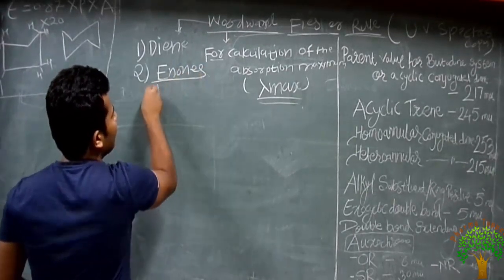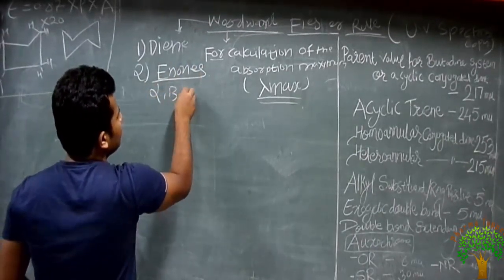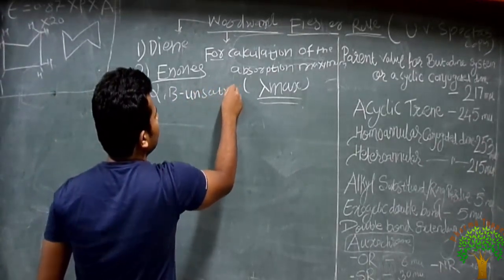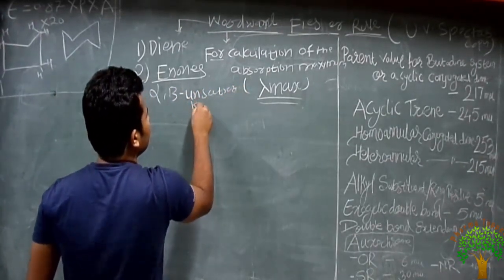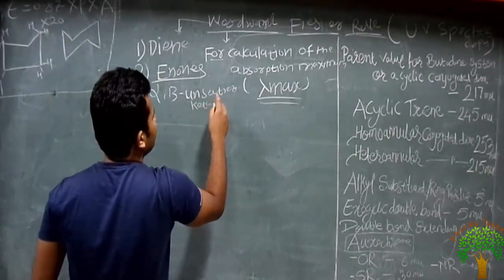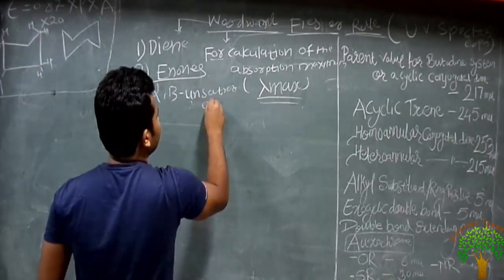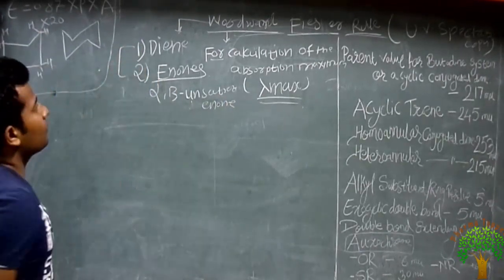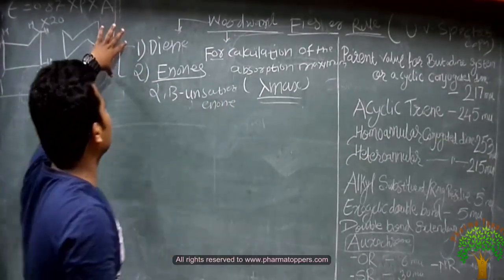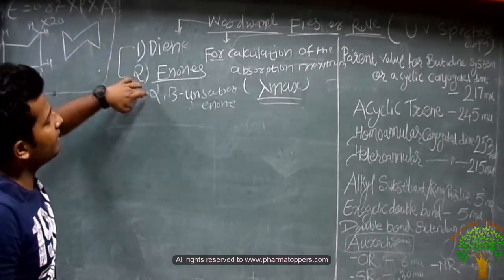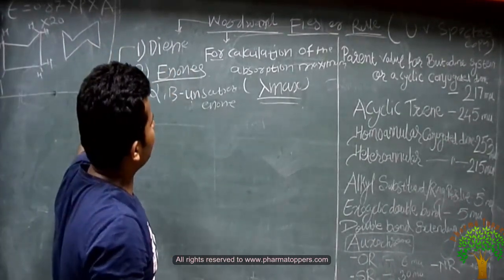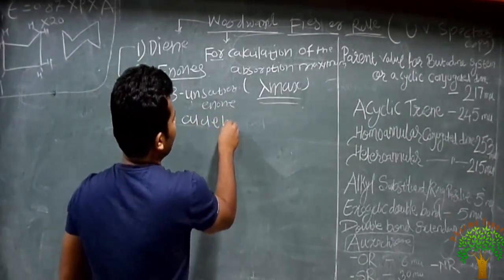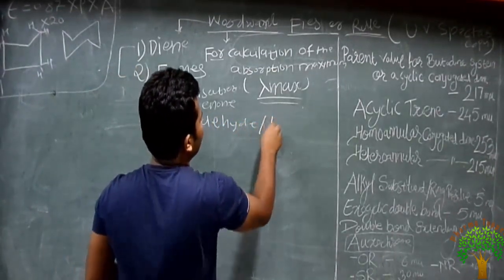The enone system refers to alpha, beta-unsaturated carbonyl compounds — it may contain an aldehyde or a ketone. That is, alpha, beta-unsaturated enones containing aldehyde or ketone.